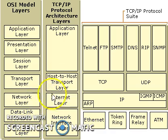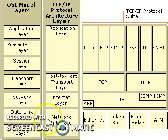The main merits of the TCP/IP model are: it operates independently, it is scalable, it uses a client-server architecture, it supports a number of routing protocols, and it can also be used to establish a connection between two computers.